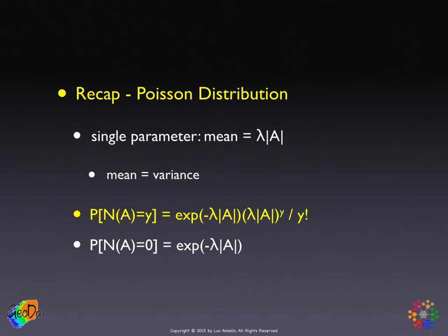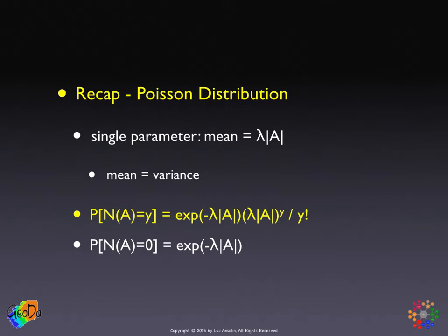Just to recap: a Poisson distribution is an ideal distribution for counts, but counts that are not too large — if they're too large, the Poisson is not appropriate. The distribution is completely characterized by one single parameter, the mean of the process. In our case, that mean is lambda times the area A. Another important and quite limiting characteristic of the Poisson distribution is that the mean equals the variance. That's why the distribution is completely characterized by one parameter, the mean.